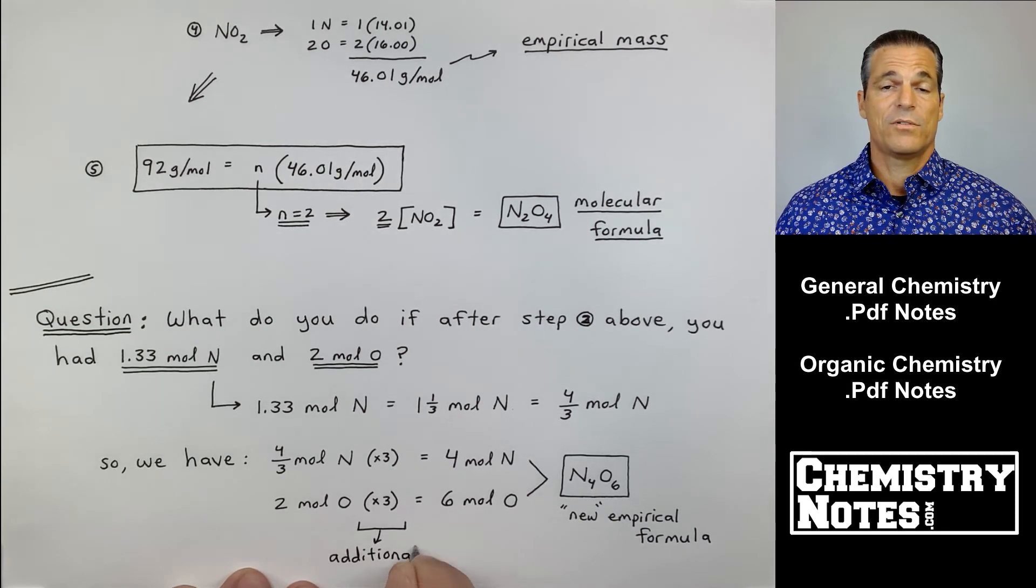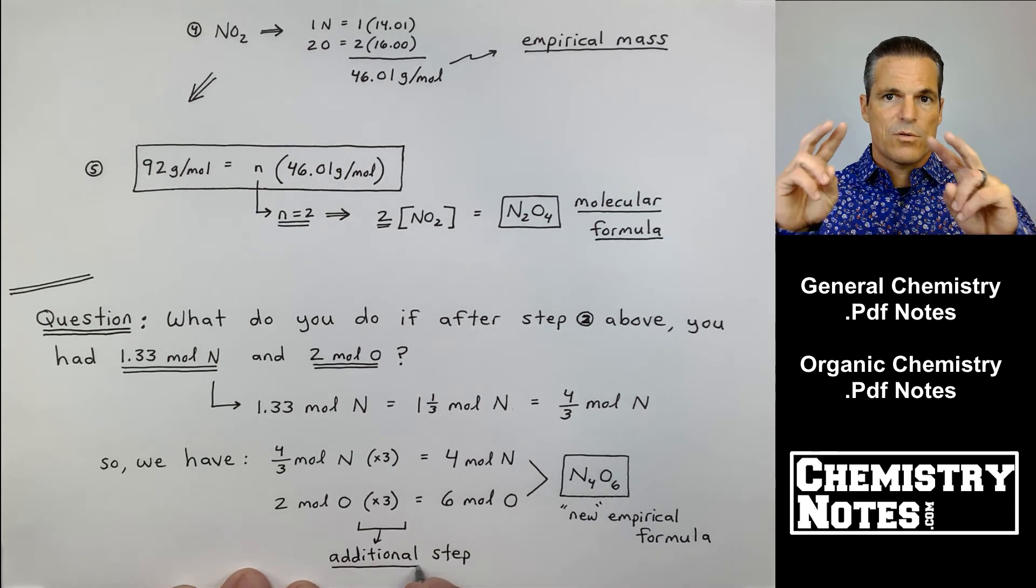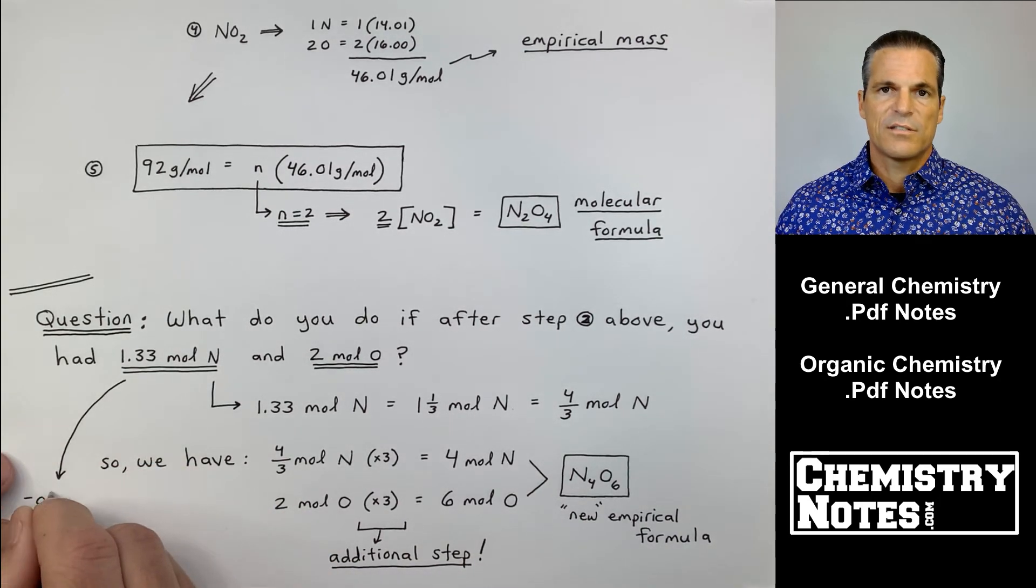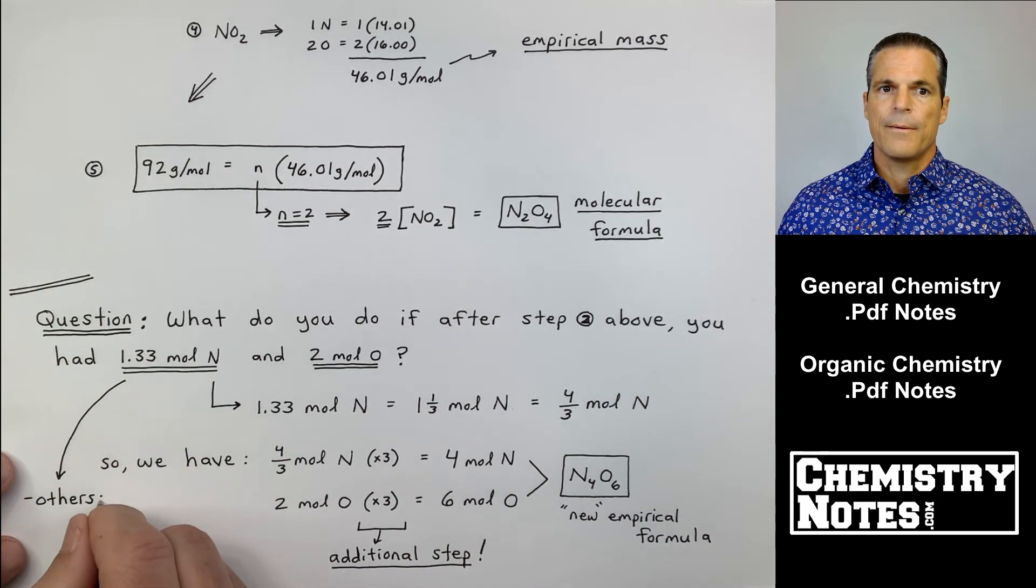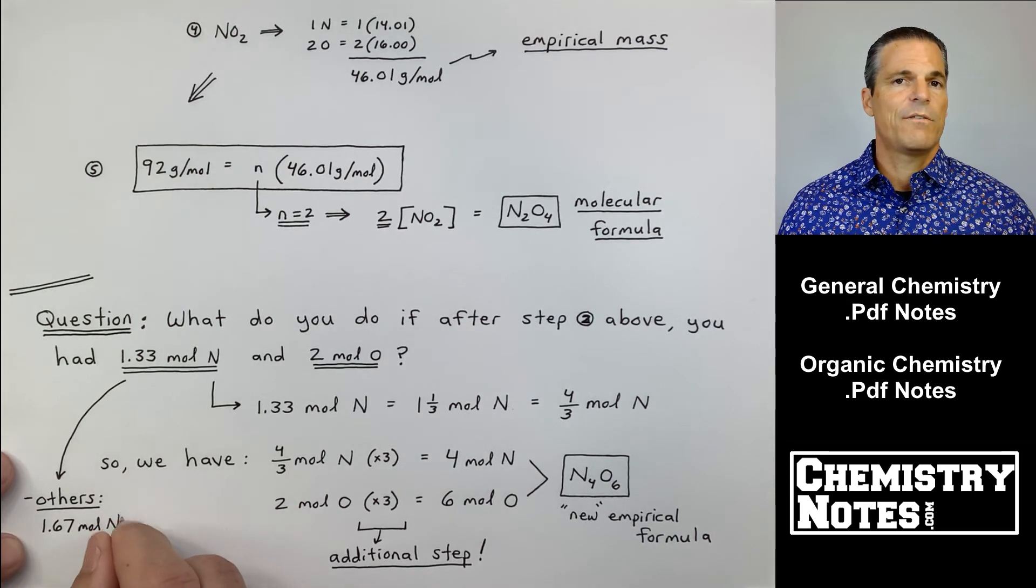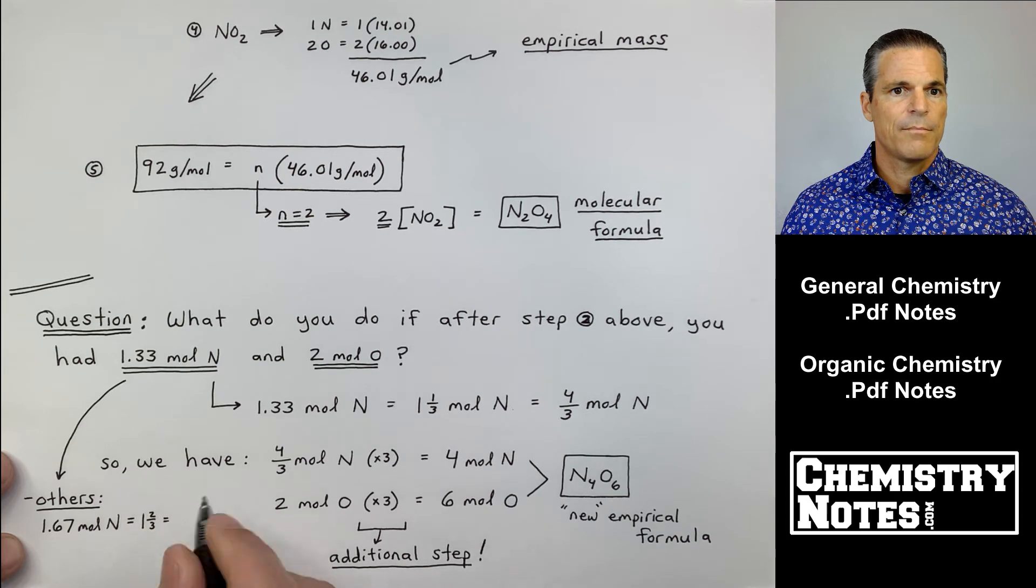The best I can do here is four moles and six moles of O: N4O6. That's kind of why I put quote "new empirical formula." I needed that additional step. I had to multiply by three. If it were a 1.67, I'd also have to multiply by three because it's going to be